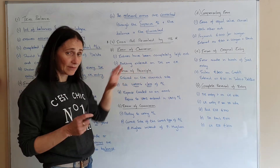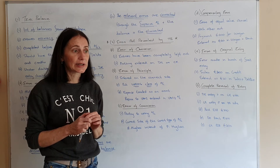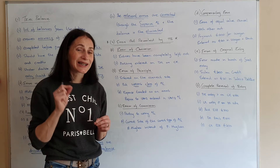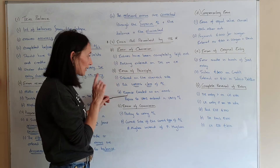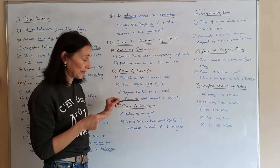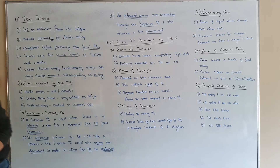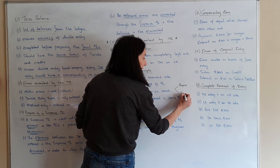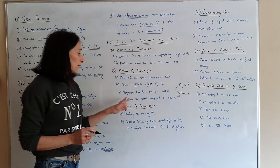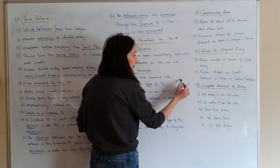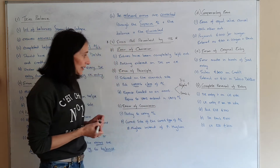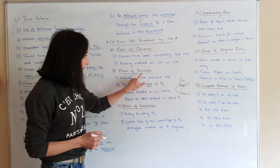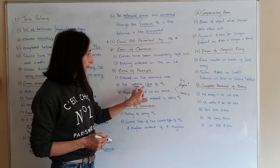Error of principle: you have entered a debit entry and a credit entry, but you've put it in the wrong type of account. For example, if you had repairs to your van, you should debit repairs and credit the bank. But by mistake, you put it in the motor vehicles account instead of the repairs account. You entered it on the debit and credit correctly, but you put it in the wrong class of account.